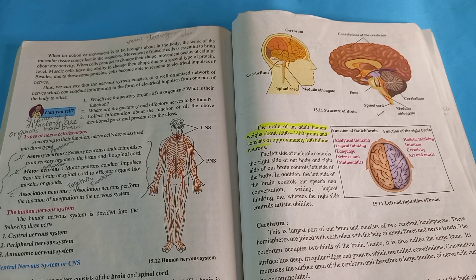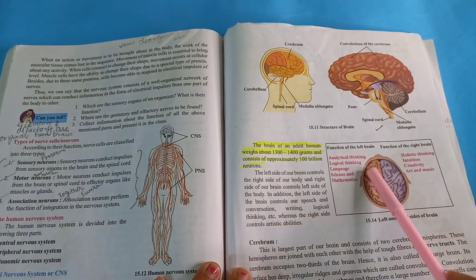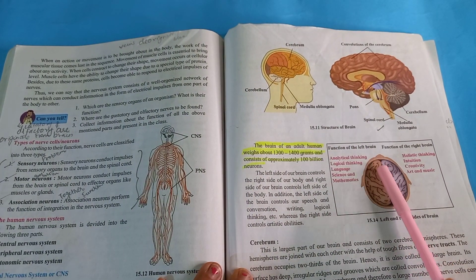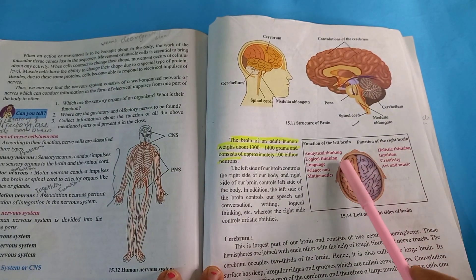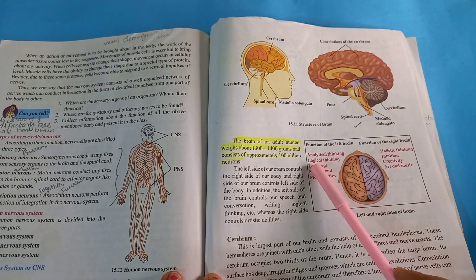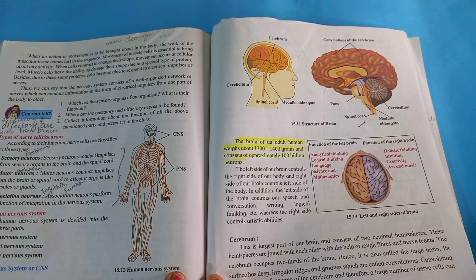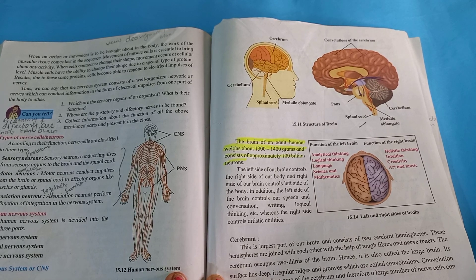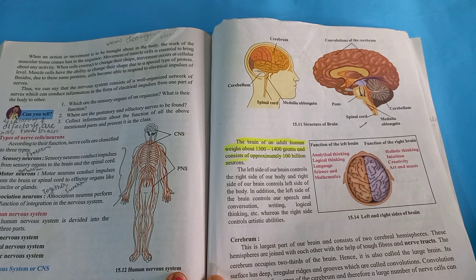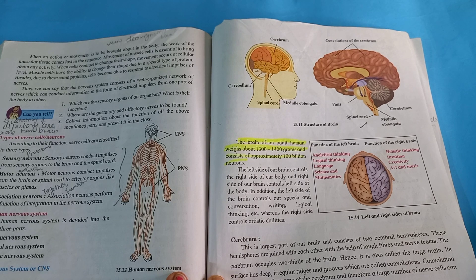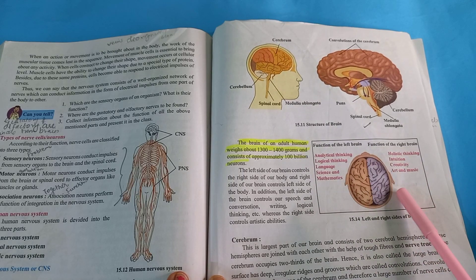Aapko aapne socha bhi hoga ne ki brain mein bhi divide kar rakha hai. See, this is the brain. Unhone bata rakha hai ye aapko part divide kar rakha hai: functions of the left brain, ye left brain hai, functions of the right brain. Ye kya-kya function hai aapka: analytic thinking, logical thinking, jo aap bahut hi gehri sochte ho, jo logical, scientific soch hai aapki, logical soch hai. Then language, jo aap bhasha bolte ho, jaise bhi main aapko bol rahe hai Hindi mein, English mein, science and mathematics, jo bhi aapka calculation hai, science hai, jo dimaag wala kaam hai, wo jyada tar left brain karta hai.